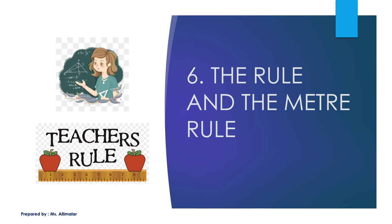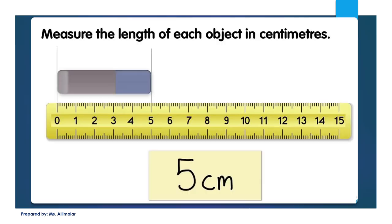Okay, this is the sixth chapter: the rule and the meter rule. In order to learn this chapter, you need a normal ruler — a 15 cm ruler — and also a 30 centimeter ruler, which is a long ruler. I'm very sure you won't have the meter rule with you, so just get the 15 cm ruler and also the 30 cm ruler.